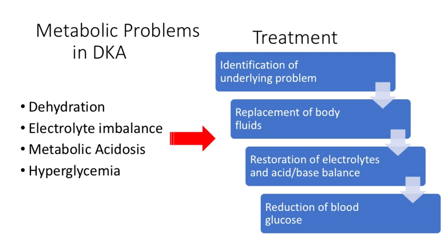Treatment starts with looking, as part of your diagnostics, for an underlying problem that you can treat, such as an infection. In order of priority: replacement of body fluids with fluid therapy, including appropriate electrolyte and acid-base therapy, and then the reduction of blood glucose. The use of fluids themselves will reduce blood glucose to begin with, and then addition of insulin will help to start clearing the ketone bodies and also reduce the glucose.